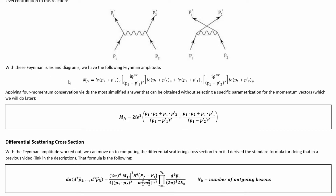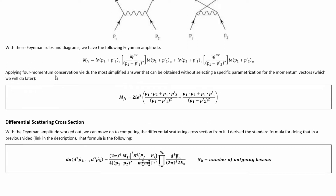With these Feynman diagrams and rules, we can write out the Feynman amplitude quite easily — we simply get this. We can apply 4-momentum conservation to simplify this down as much as we can without selecting a parameterization for the momentum 4-vectors. Doing that is pretty trivial, and it yields this result.